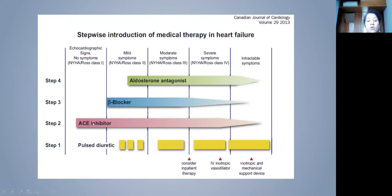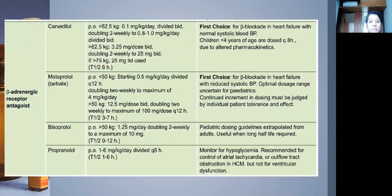In heart failure management, the first step is a diuretic; the second step is an ACE inhibitor; the third step in Class 2 is adding a beta blocker; and later an aldosterone antagonist like spironolactone. So beta blockers come after stabilization on an ACE inhibitor. For carvedilol, start at 0.1 mg/kg/day divided TID, and double the dose every two weeks with monitoring.